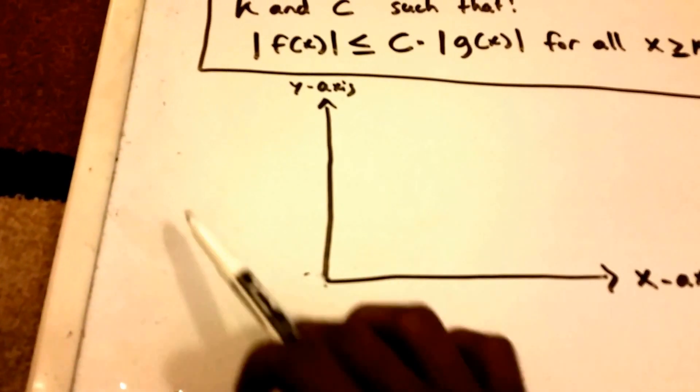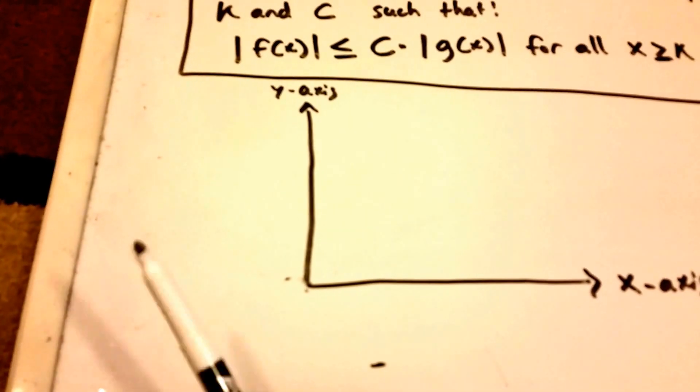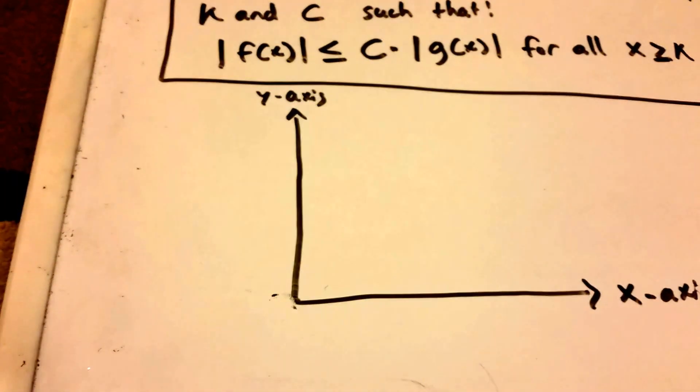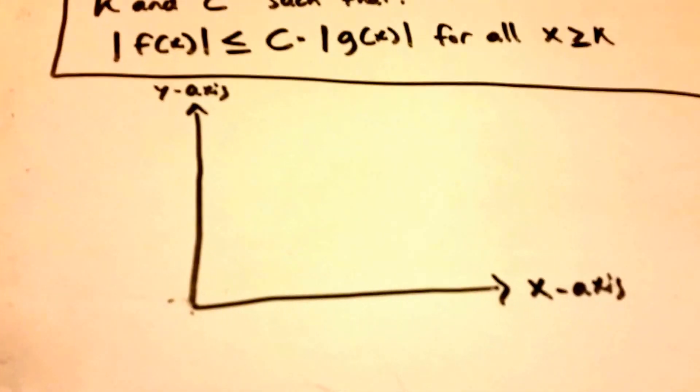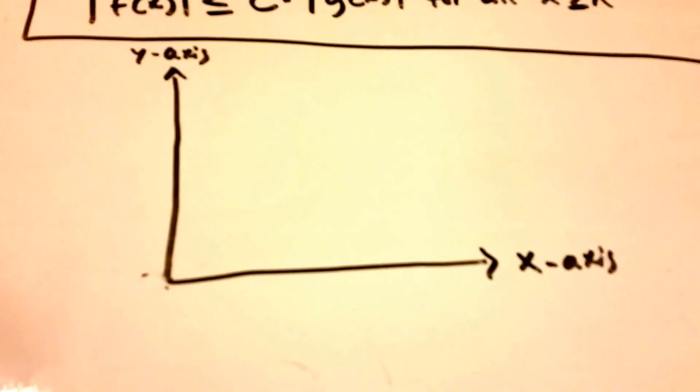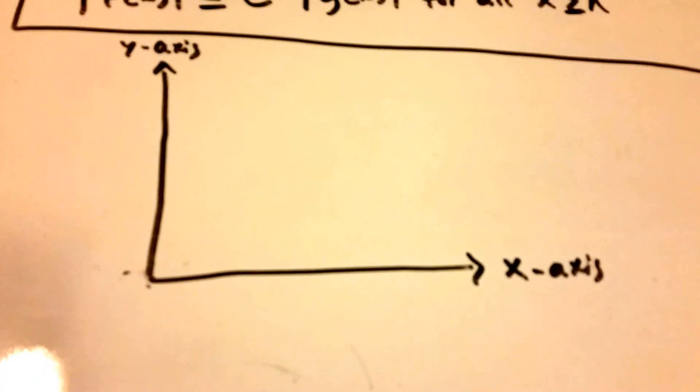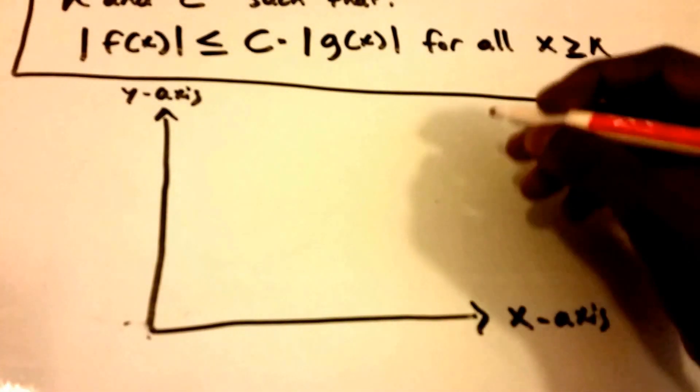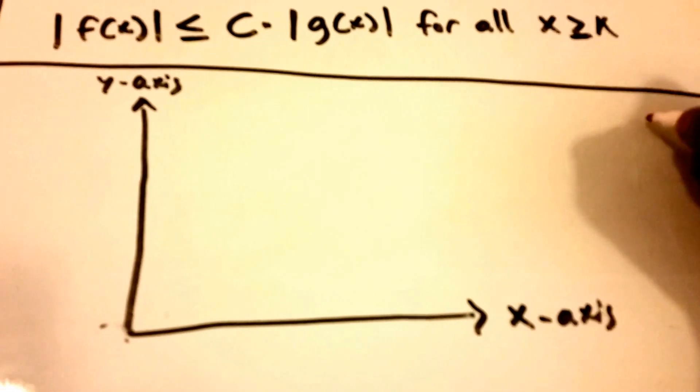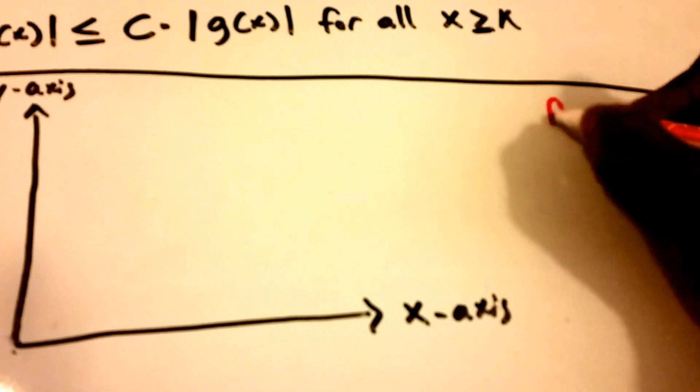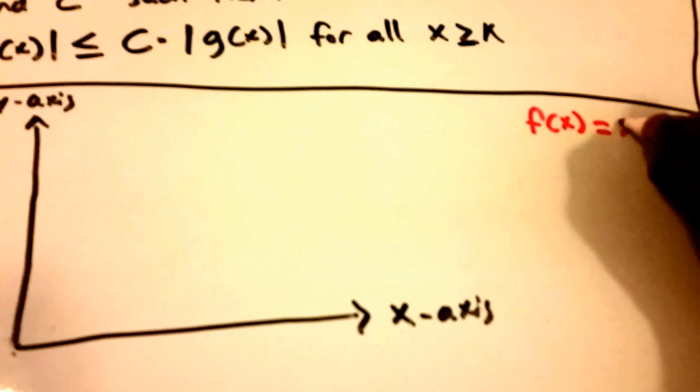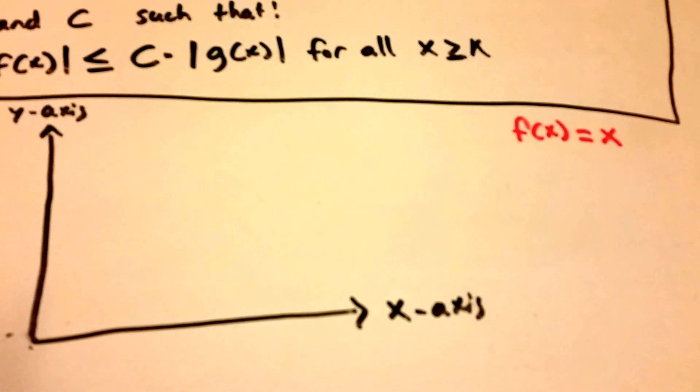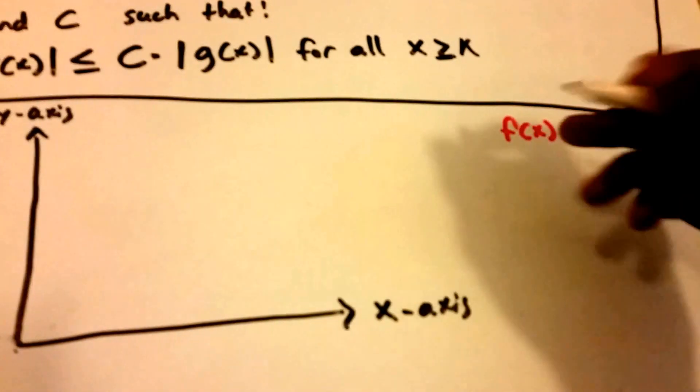So that's this quadrant here, we don't have to worry about the other three quadrants. All right, so now I'm going to put up my black marker here and let's use a different color marker as an example. And we're going to let f of X be equal to X and we're going to let G of X be equal to X squared.